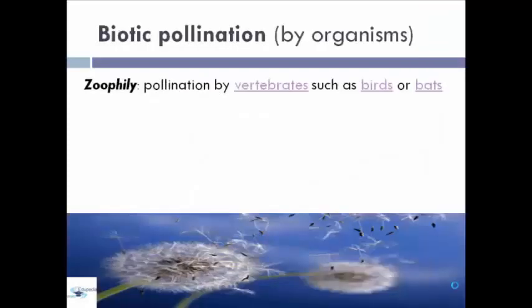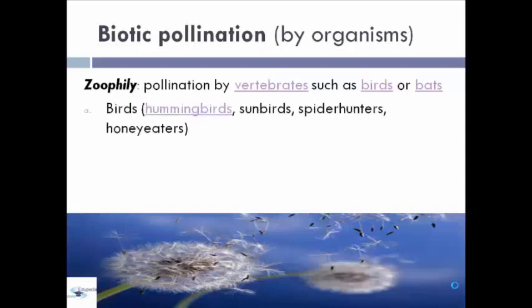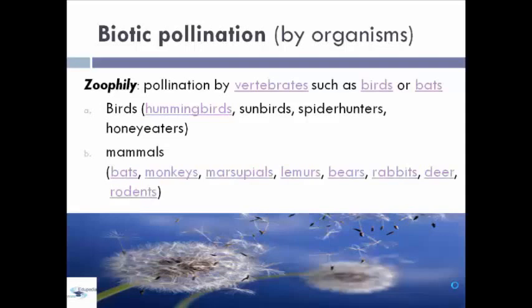Next, for biotic pollination, we have zoophily — pollination by vertebrates such as birds or bats as discussed. Birds such as hummingbirds, sunbirds, and honey eaters. Next, we have mammals such as bats, monkeys, marsupials, lemurs, bears, rabbits, deer, and also lizards.